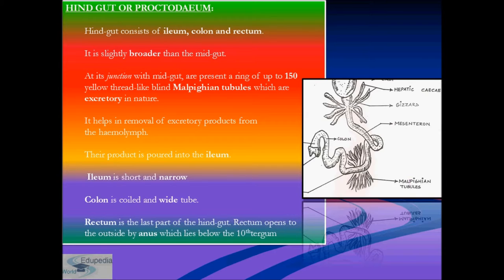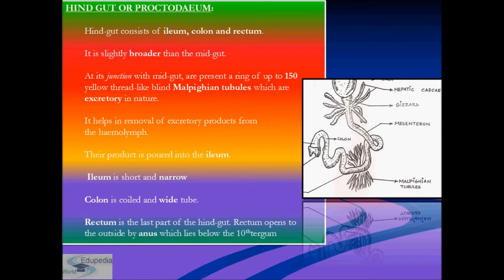At the junction of the stomach and ileum, numerous long tubules called Malpighian tubules are attached. The hindgut consists of ileum, colon, and rectum. At the junction with the midgut, a ring of 100 to 150 yellow thread-like Malpighian tubules are present, which are excretory in nature and help remove excretory products from the hemolymph; their product is poured into the ileum.